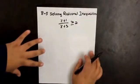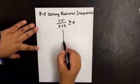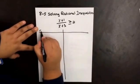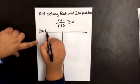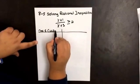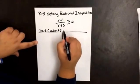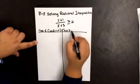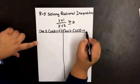Remember on the previous video I told you we were going to have two cases. Case 1: the least common denominator is positive. Case 2: the least common denominator is negative.